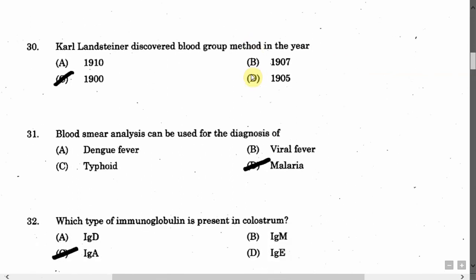The next question is: Karl Landsteiner discovered the blood group method in the year — Option A: 1910. Option B: 1907. Option C: 1900. Option D: 1905. The correct answer is Option C, that is 1900.